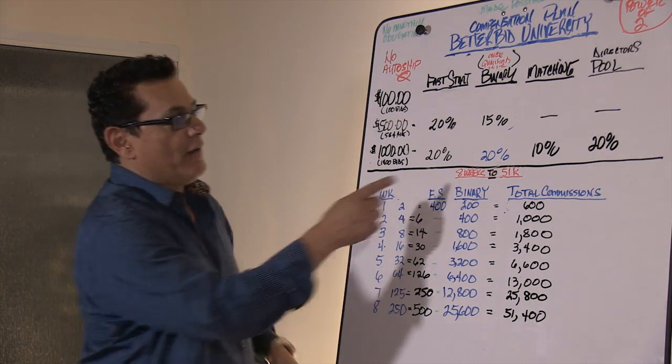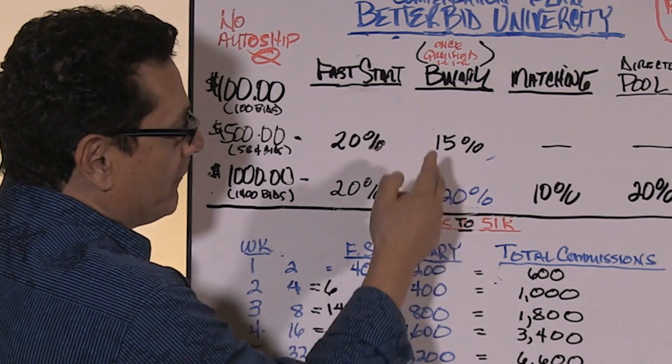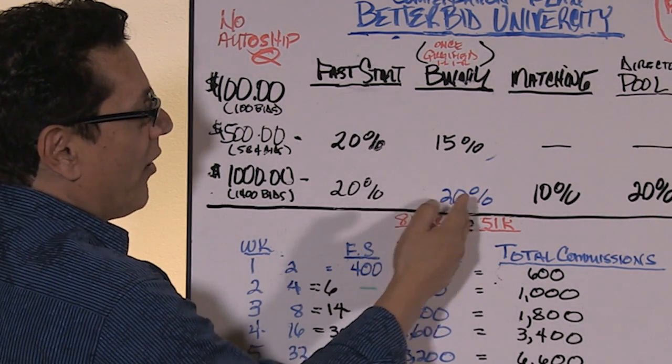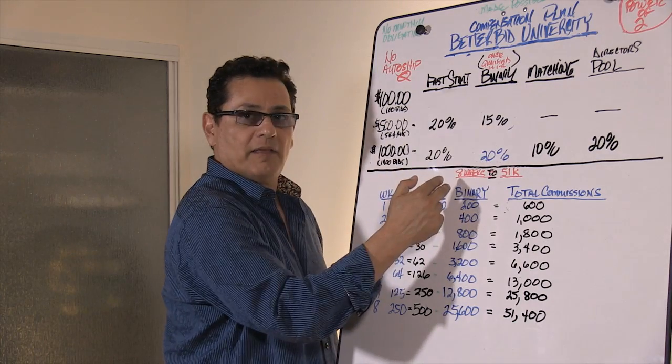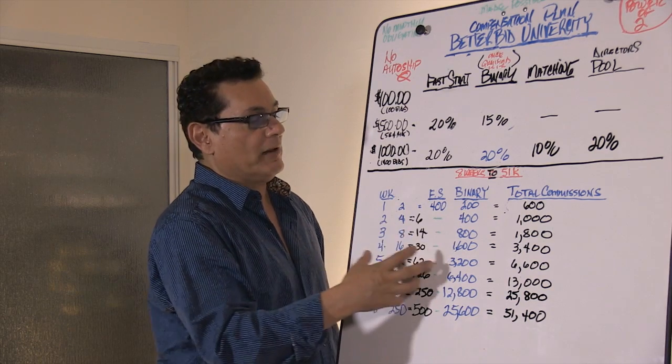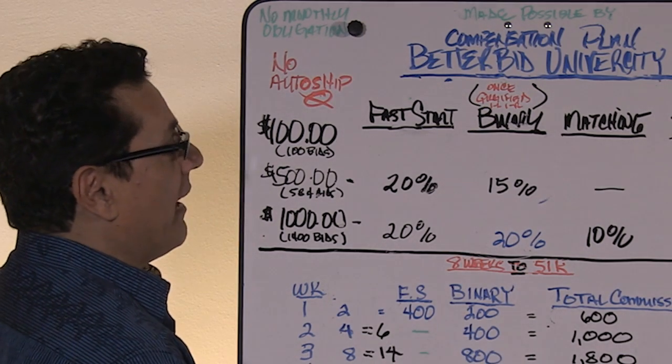And to qualify for just this segment that we're talking about, this binary pay, to get to 20%, all you have to do is bring one on your left and bring one on your right and get all your people to do the same thing and they can realize this big pay.